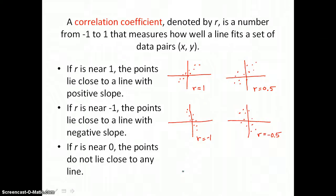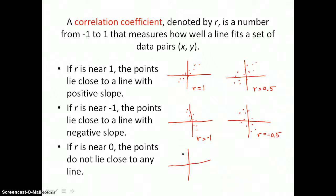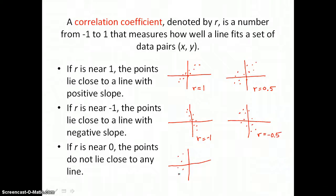If r is near 0, the points do not lie close to any line — we have data with no best-fitting line indicated and no correlation indicated.